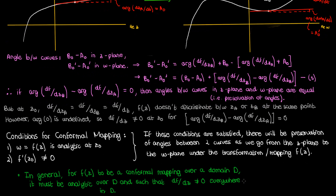The conditions for angle preservation that I've just demonstrated — that df/dz must be non-zero for angles to be preserved — make up what's called the conformal mapping theorem. If there is preservation of angles after a transformation f, then that transformation f must have a non-zero derivative at the point of interest. It is this theorem that we proved in this video.